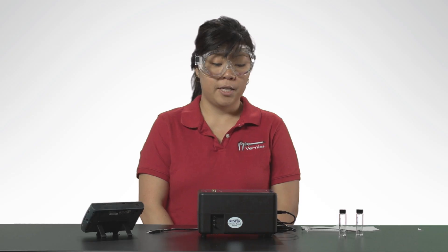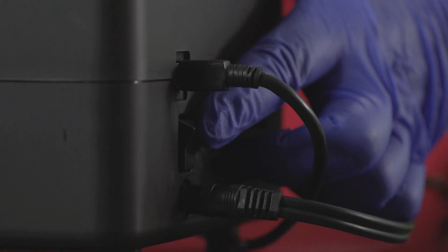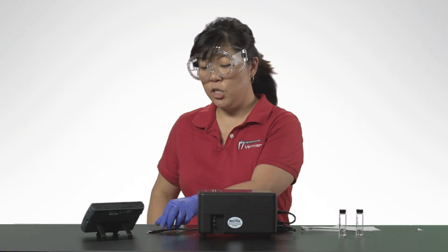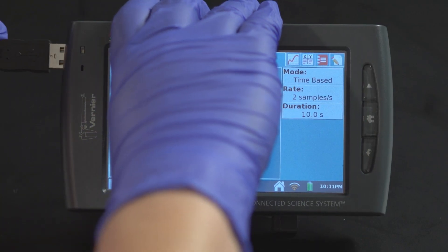Prepare the Mini-GC Plus for data collection. Connect the Mini-GC Plus to an electrical outlet. Turn on the Mini-GC using the on and off switch located on the left side. Connect the USB cable to the USB port of LabQuest.